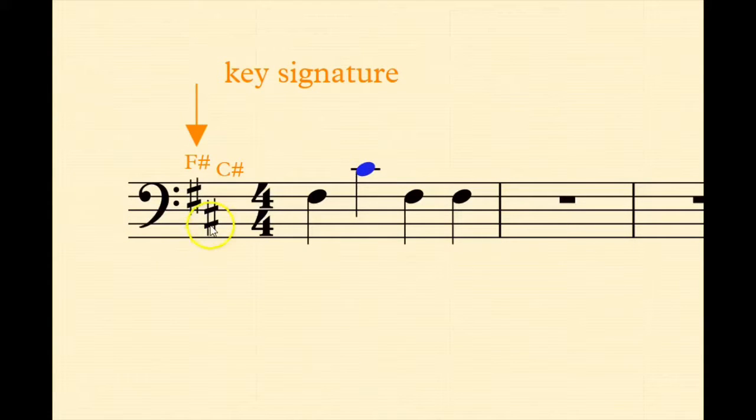The area to the right of the clef symbol is called the key signature. Here we have two sharps, F sharp which is on the second line from the top and we have C sharp which is on the second space from the bottom.